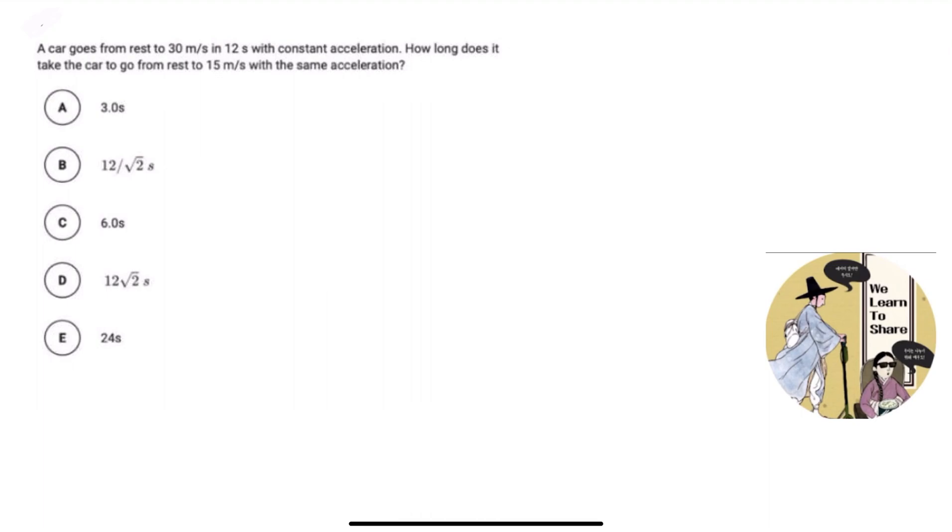So first we got that the car goes from rest, which means that our initial velocity would be zero, right? And then the final velocity would be 30 meters per second, and then it took 12 seconds with the constant acceleration.